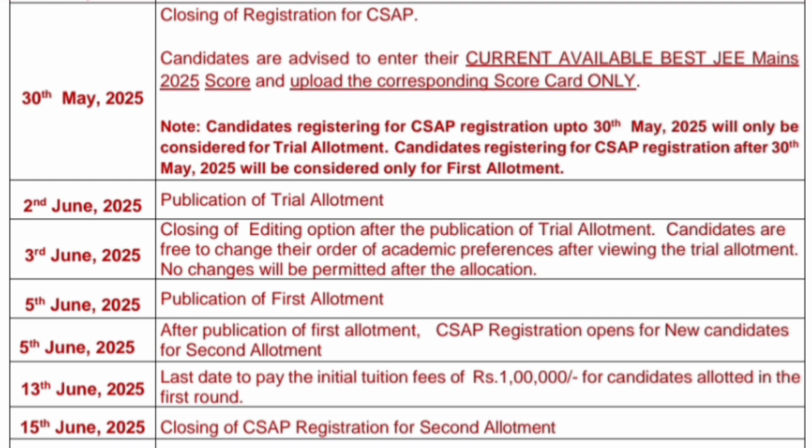On 5th June, you will get the first round allotment result. From 5th June, new candidates can also register for the second round. 13th June is the last day to pay the initial tuition fees of 1 lakh rupees for candidates allotted a seat in round 1. If you pay 1 lakh rupees, only then can you block and confirm your seat. The remaining amount you have to pay later.